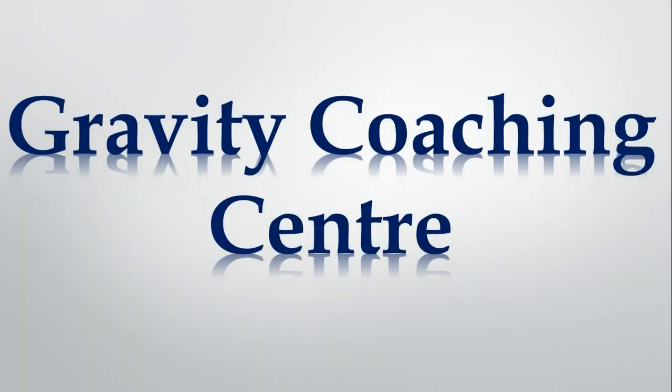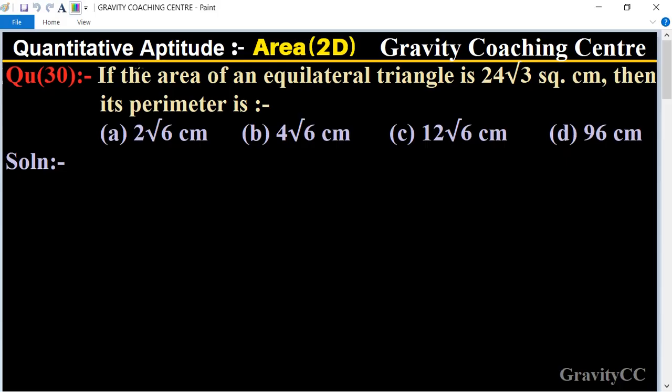Welcome to our channel Gravity Coaching Center, quantitative aptitude chapter area, question number 30. If the area of an equilateral triangle is 24√3 square centimeters, then its perimeter is which option? So in this question given...